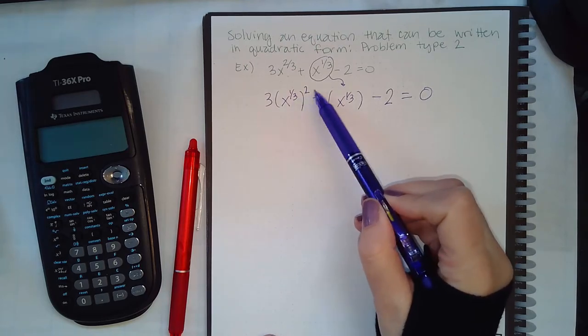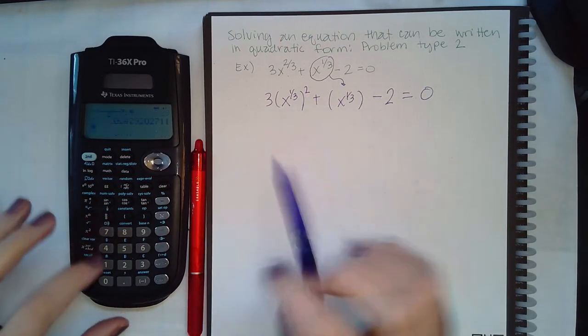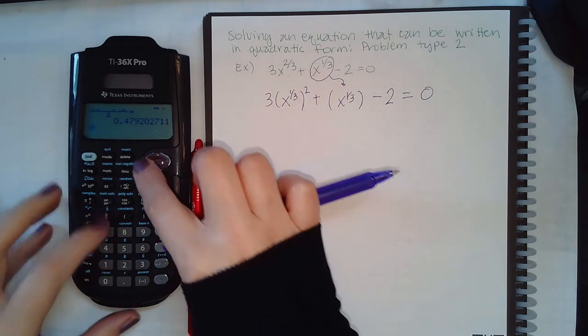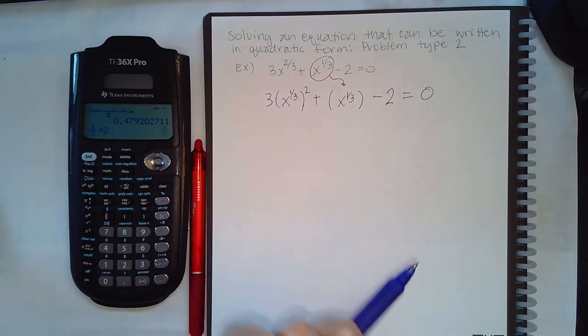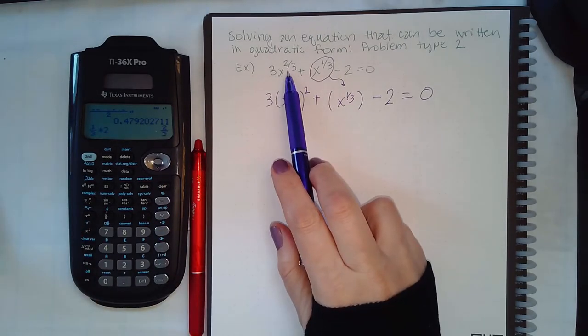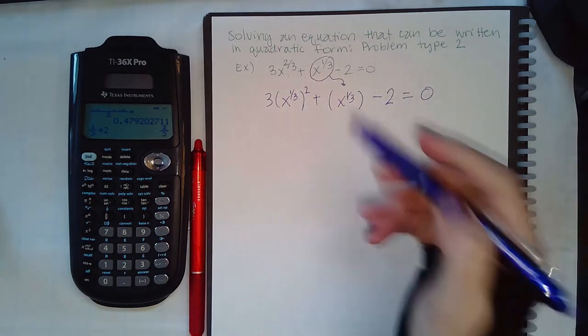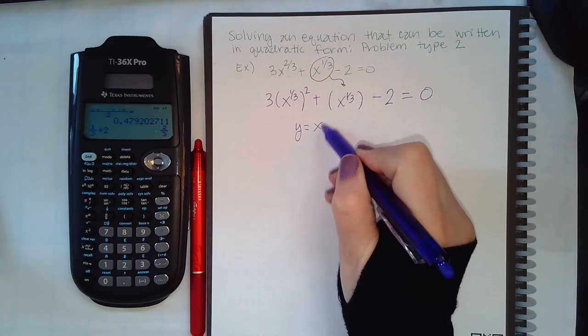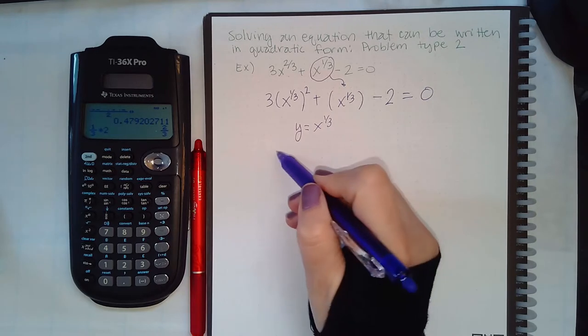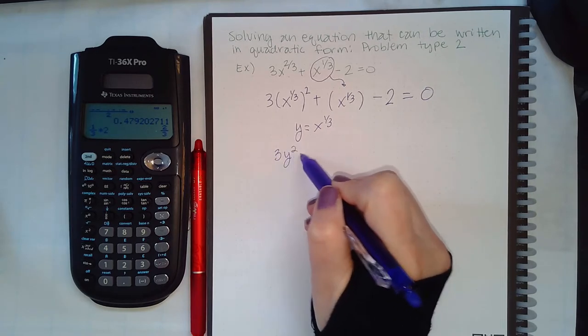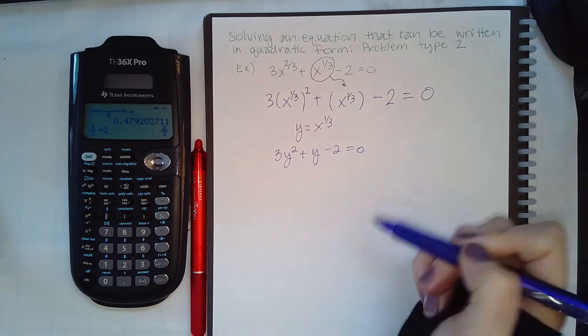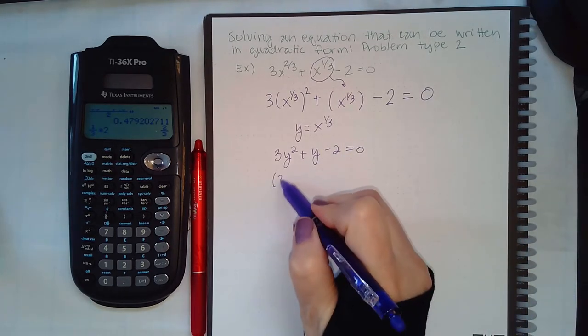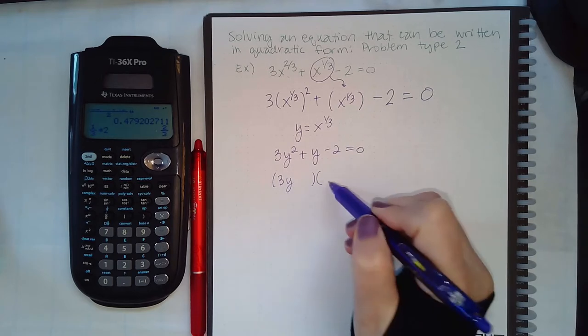And it does, because when you have power raised to a power, you're supposed to multiply these together. If you multiply one-third times two, you end up with two-thirds as it should be. So this is the correct form, which means my y value is going to be what's inside the parentheses. Then if I substitute that, I end up with this equation here.